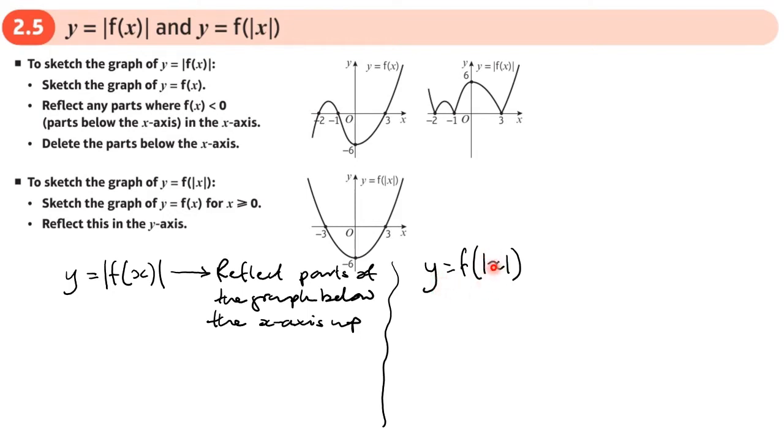So any negative values of x will behave as if they were positive values of x. So that gives us a clue as to how to draw these graphs.